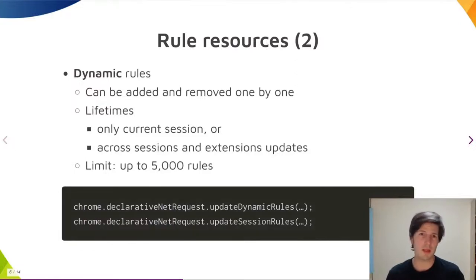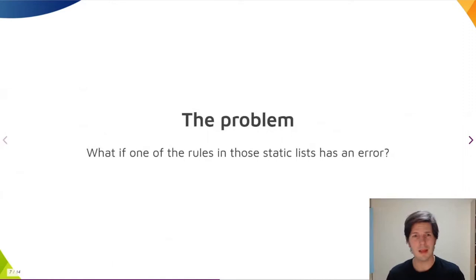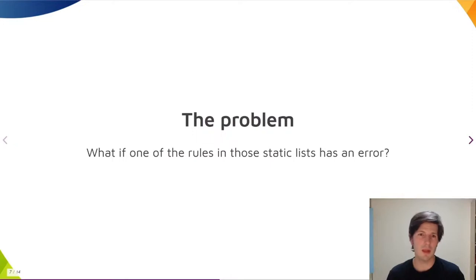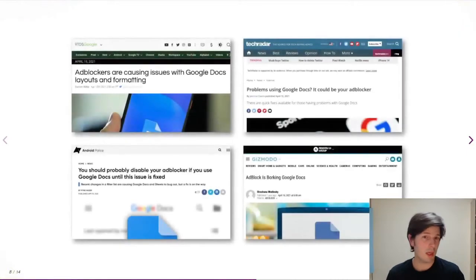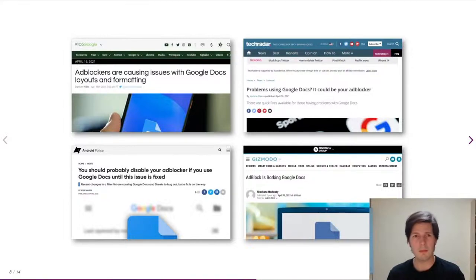Since the most useful lists have tens of thousands of rules, they have to be bundled statically with the extension. The problem we are looking at happens when one of the static lists bundled with an extension includes a rule that turns out to be harmful after it has been distributed to users. This happens every once in a while, and usually nowadays extension developers take a short time to detect and fix these errors. Sometimes the problem becomes more widespread and more visible — for example, last year when an error in EasyList broke functionality in Google Docs. But still, also in that case developers were able to get notified, fix the problem, and distribute the updated list within a day or so.